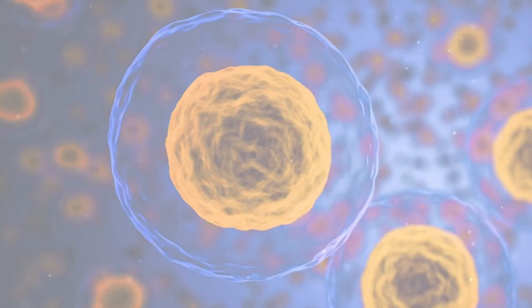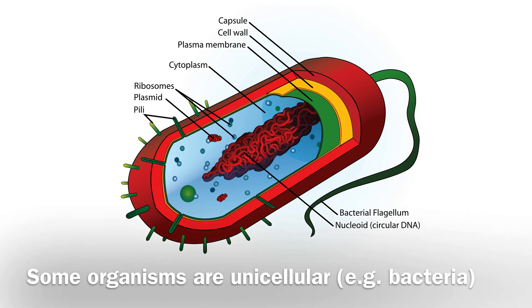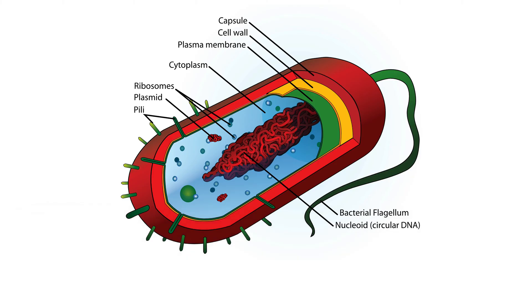And indeed we do find some living organisms that are unicellular, composed of one cell — for example bacteria or prokaryotic cells — but larger organisms tend to be multicellular.